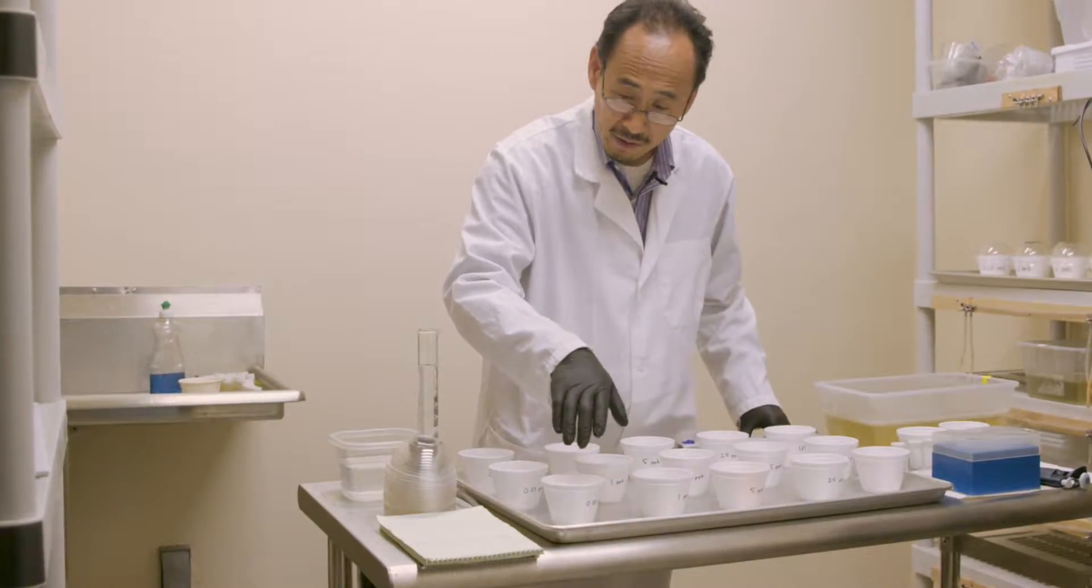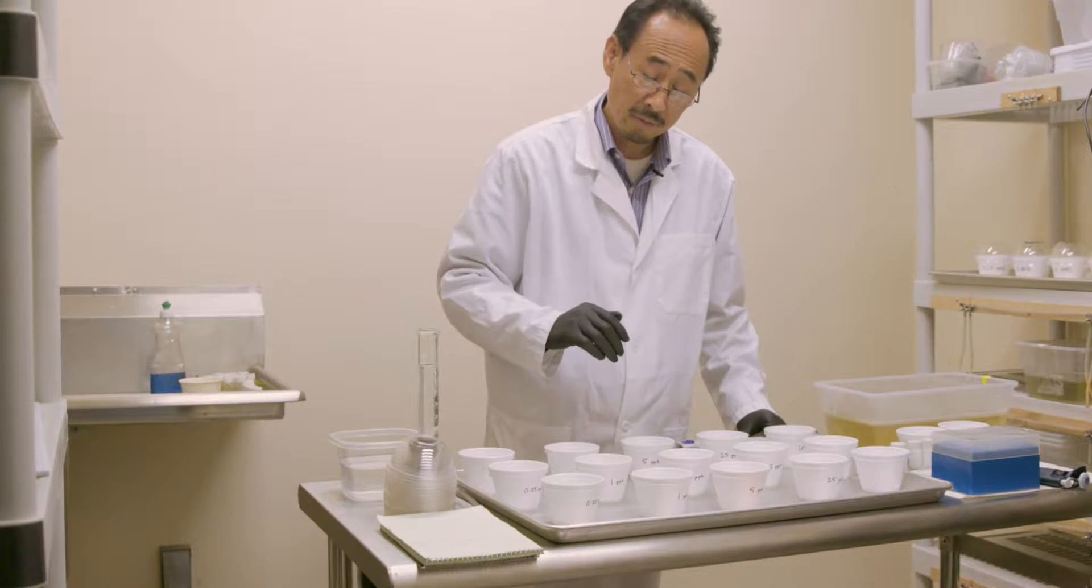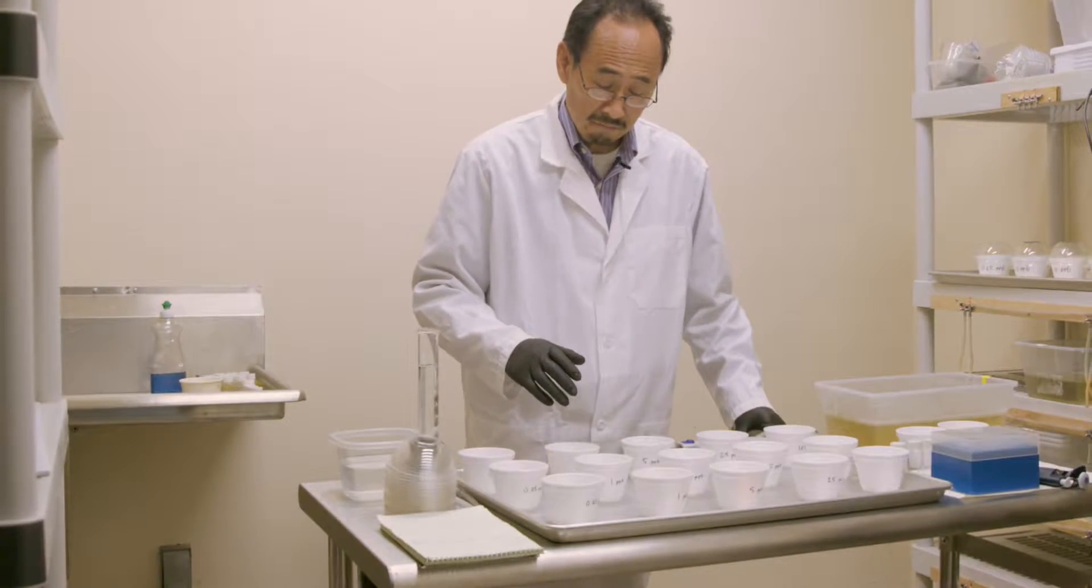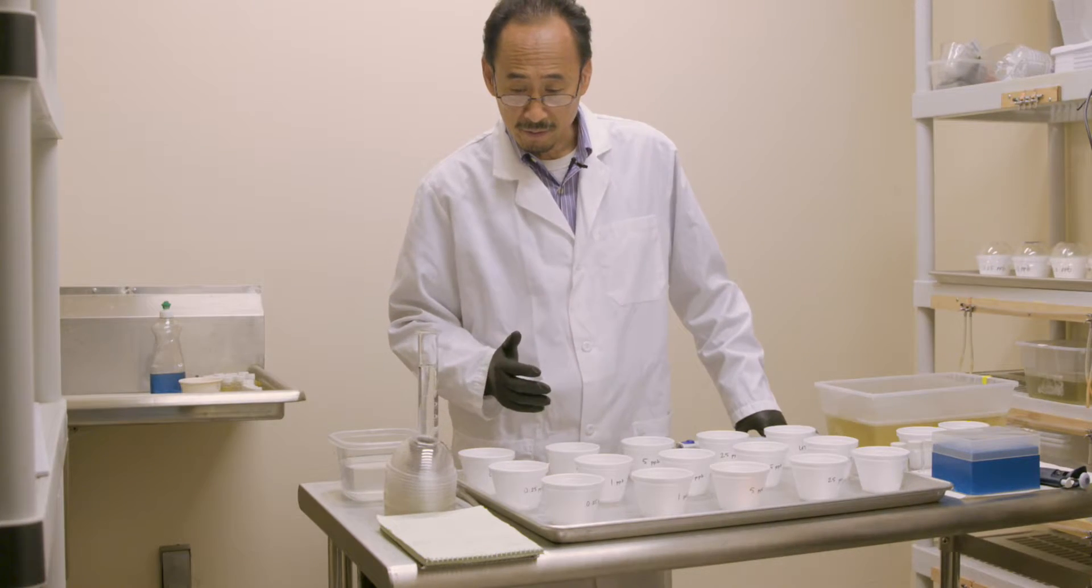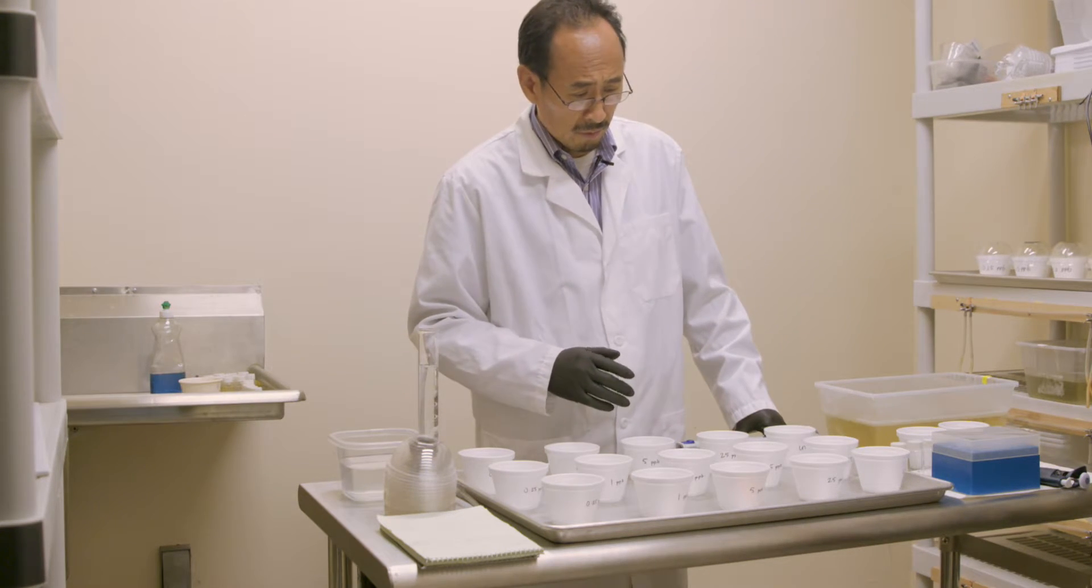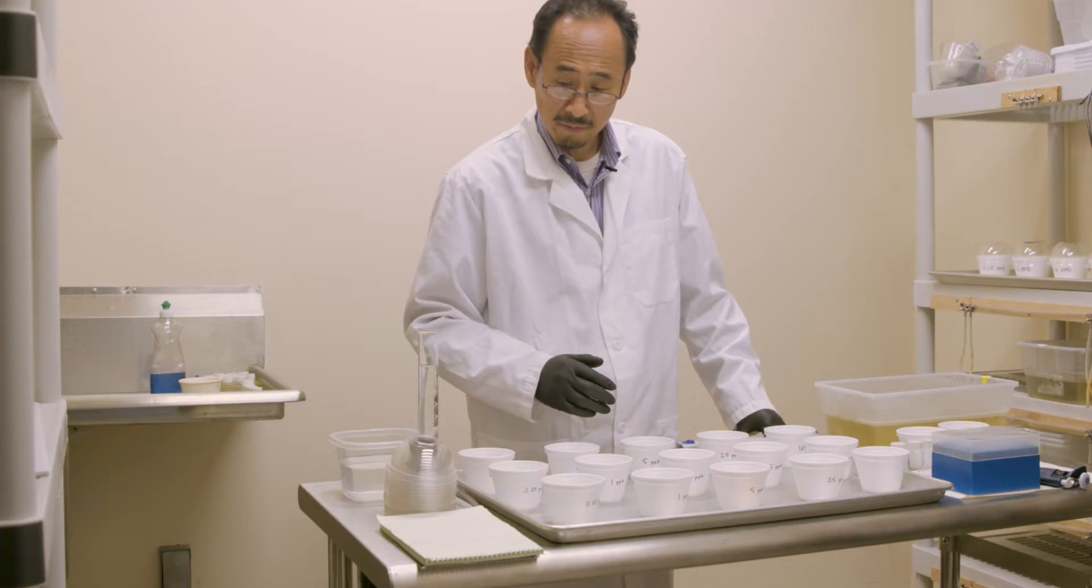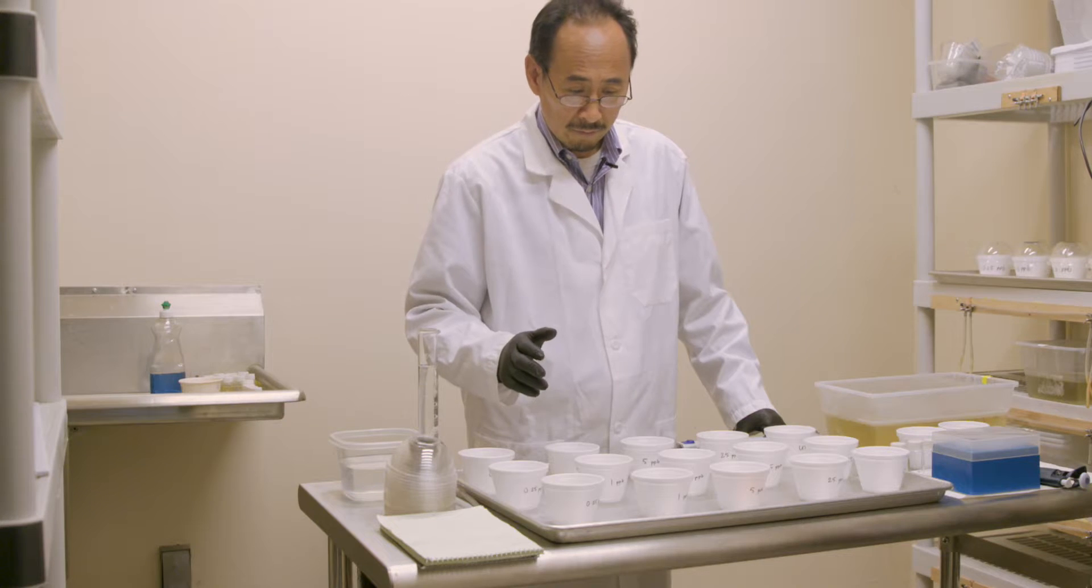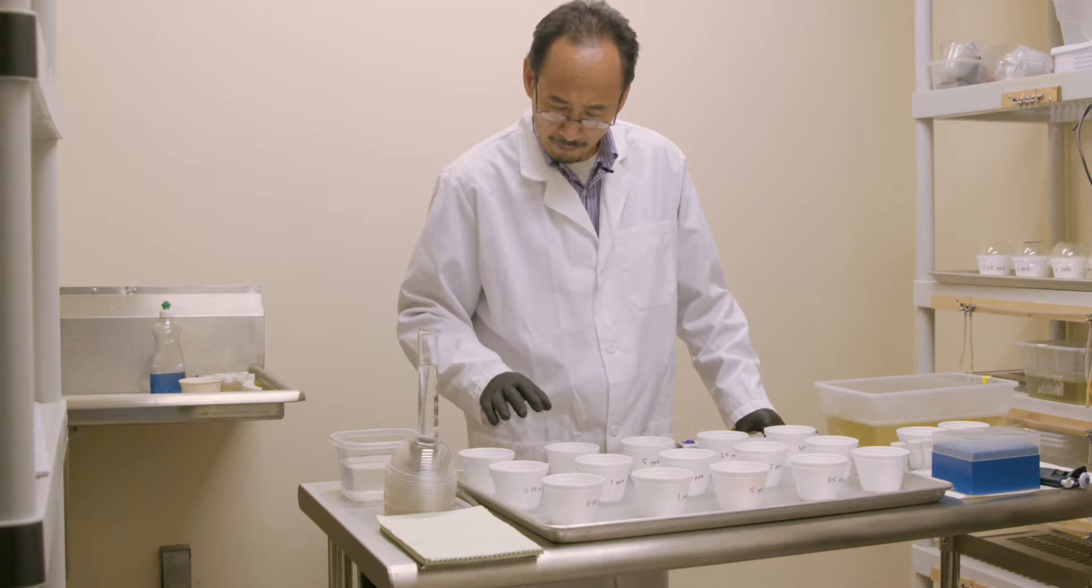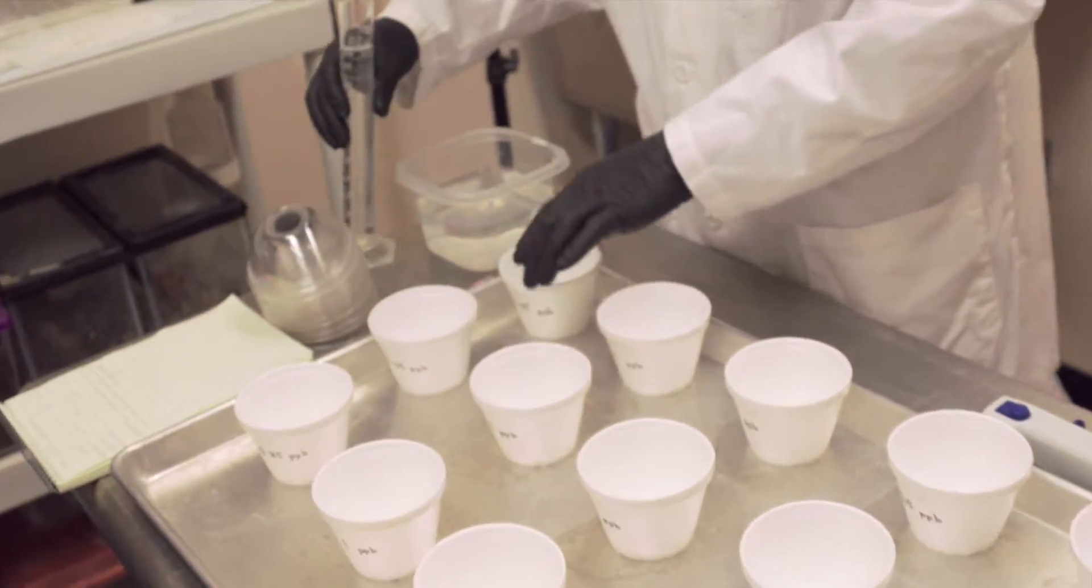As you can see, the range here from 0.25 to 25 is 100 times. For BTI and spinosad and any other larvicide which kills larvae quick, you mostly use a range like five-fold maximum. But this one, the range is much broader. You're going to add 100 ml of water per cup.